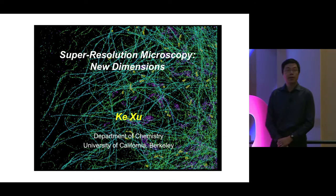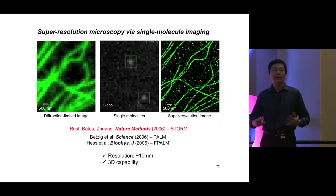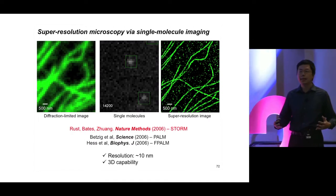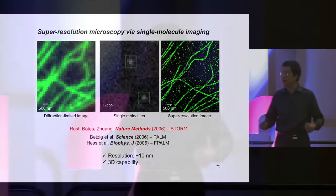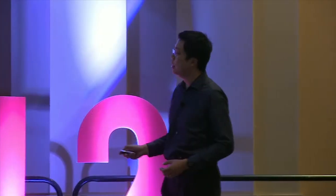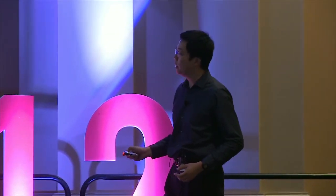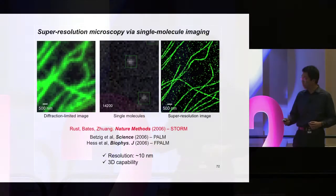To begin with, you may realize that for microscopy there is a resolution limit due to the diffraction of light. For conventional methods, you cannot achieve a resolution better than about 300 nanometers. Super-resolution microscopy is a field that tries to push over this limit so that we can get much higher resolution.